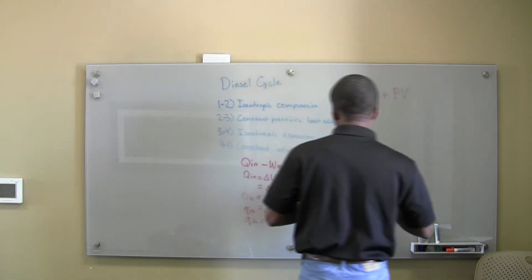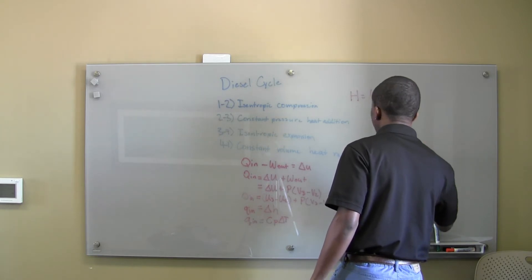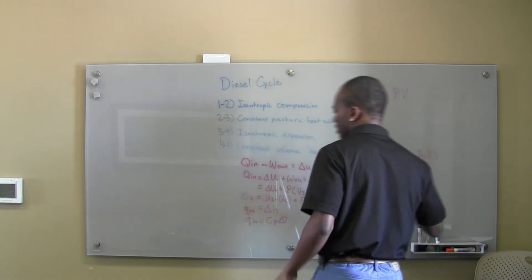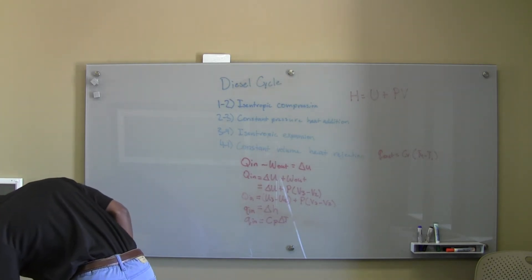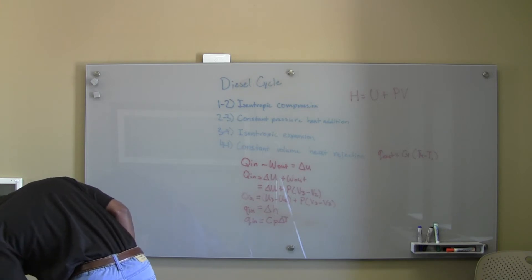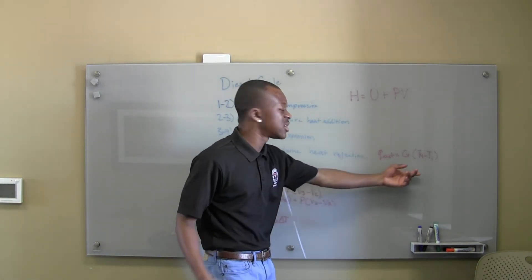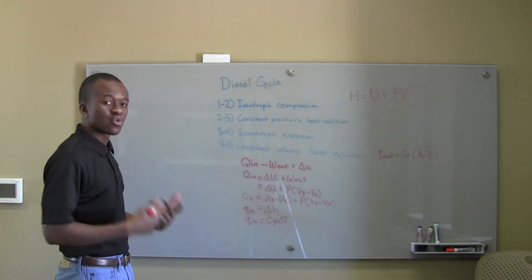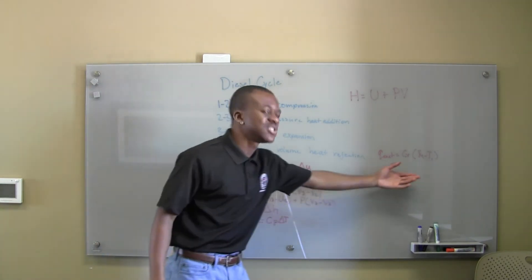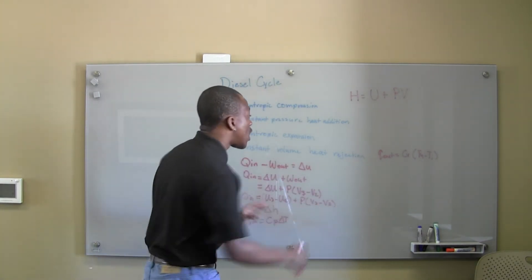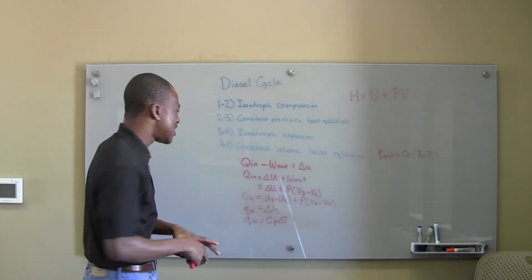Likewise, when we have constant volume, Q out is equal to CV·delta T — CV(T4 minus T1). You're going to know this because you need to end up with a positive number, so use logic there. I remember CV for constant volume and CP for constant pressure — that makes sense and that's how you get your answer.